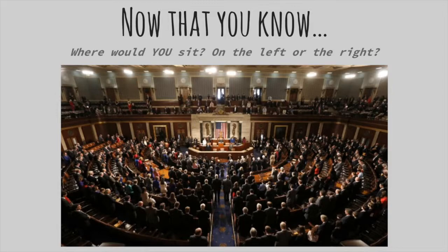Now that you know the difference between liberals and conservatives, and why Democrats are called liberals or left-leaning thinkers and Republicans are called conservatives and right-leaning thinkers — where would you sit? Would you be on the left or on the right? Here's a picture of Congress in the United States, and as you can see, it is clearly divided — because Democrats and Republicans do sit on the left or the right. I hope this presentation helped you understand better why Democrats and Republicans are called liberals or conservatives. Thanks for watching.